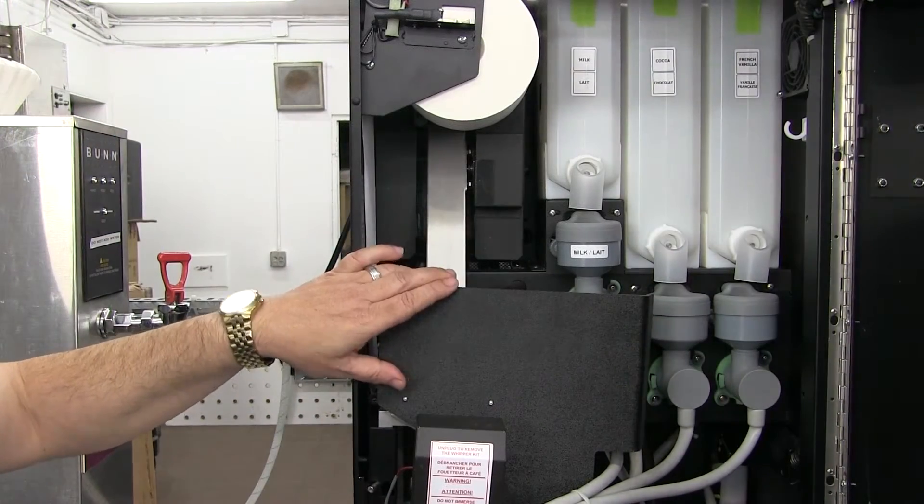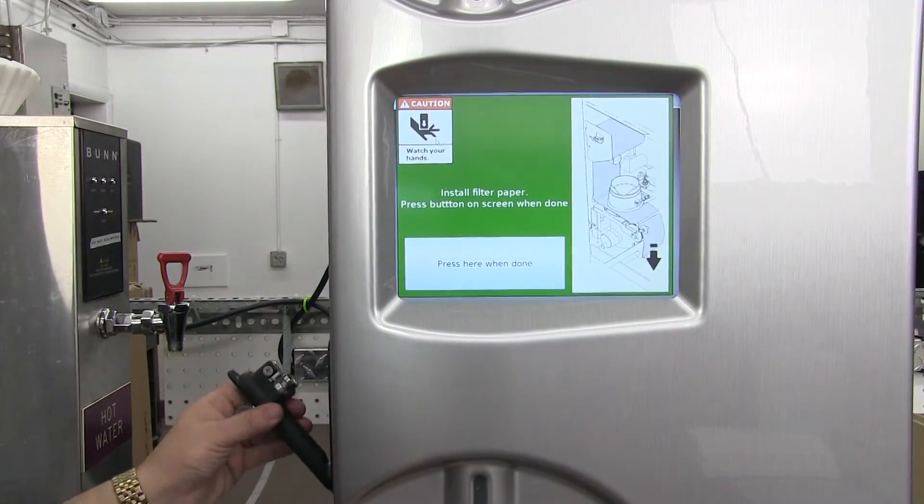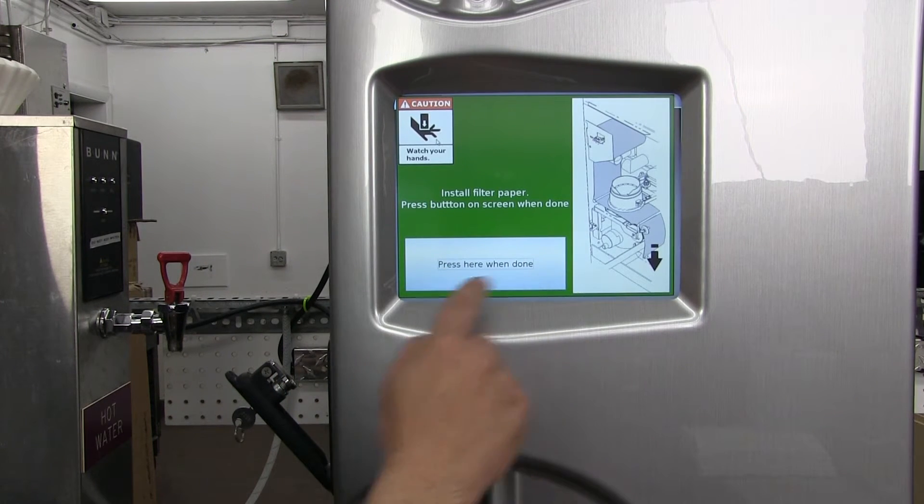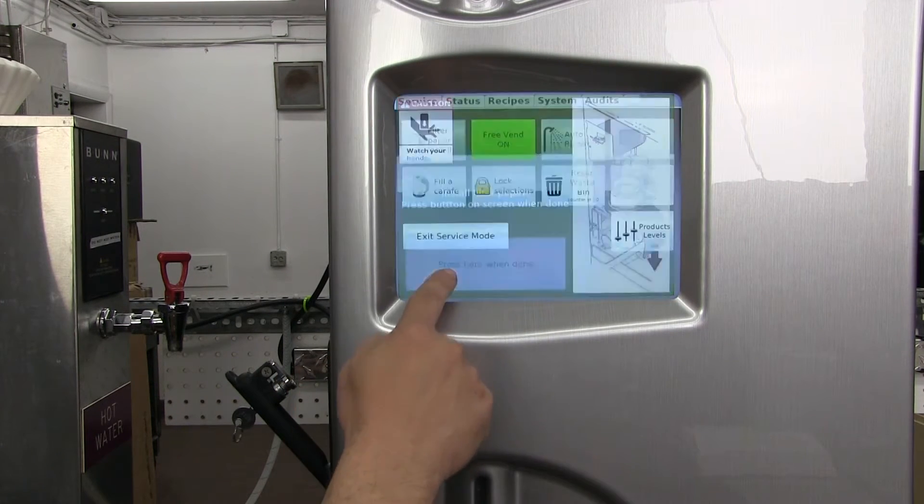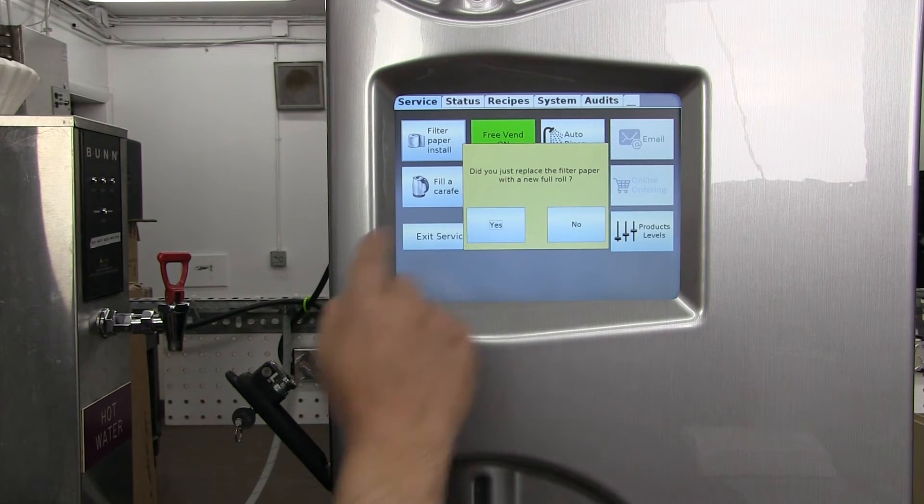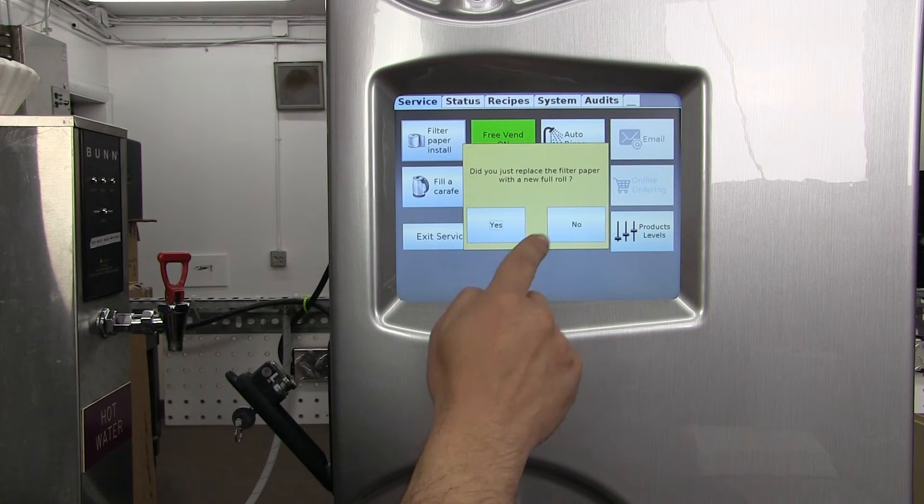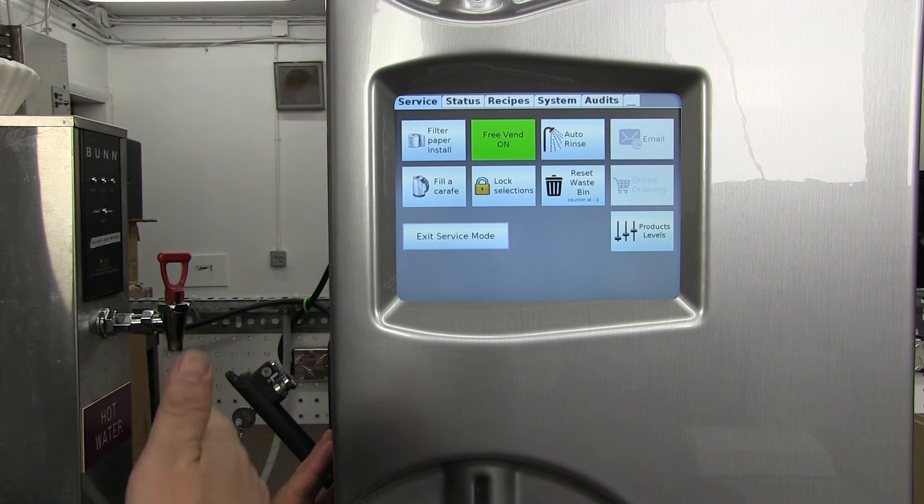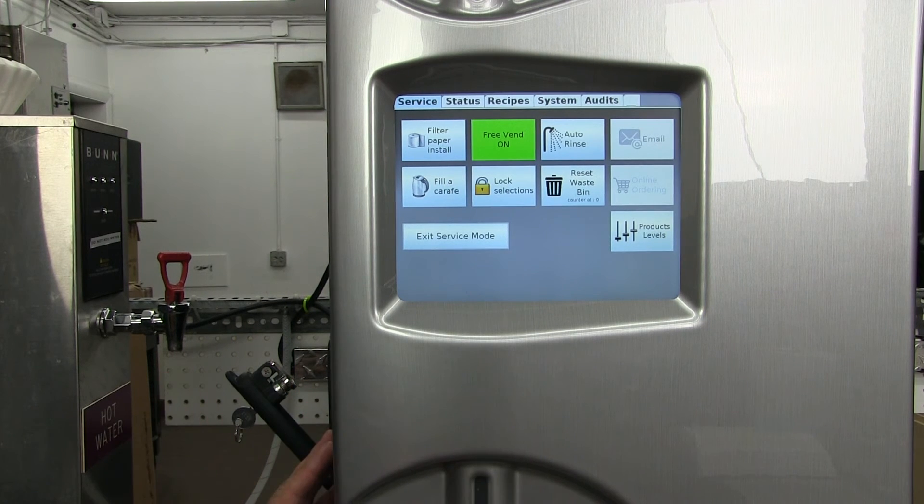Now that our guard is in place we'll close the door, latch the handle, and we'll follow the instructions and press here because we're done. Now the machine's asking us did you replace the filter paper with a new roll and we'll tell it yes we did. The machine wants to know that so it knows approximately how many brews it's going to get on this new roll of paper.